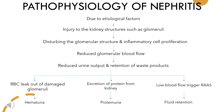Gradually, red blood cells leak out of the damaged glomeruli, which is called hematuria. At the same time, there is increased excretion of protein from the kidney, which is called proteinuria. Also, fluid retention occurs in such patients due to activation of the renin-angiotensin-aldosterone mechanism.